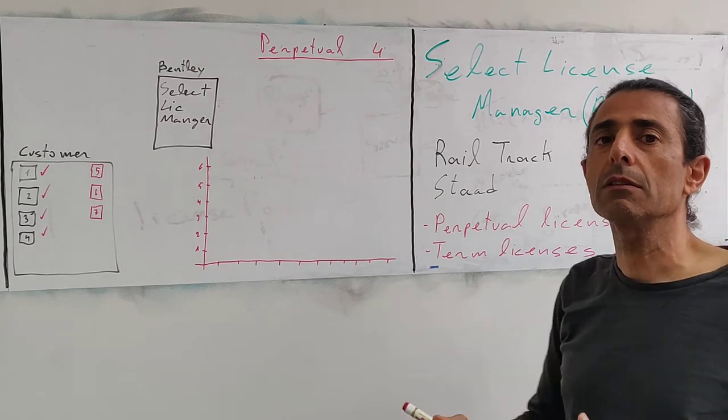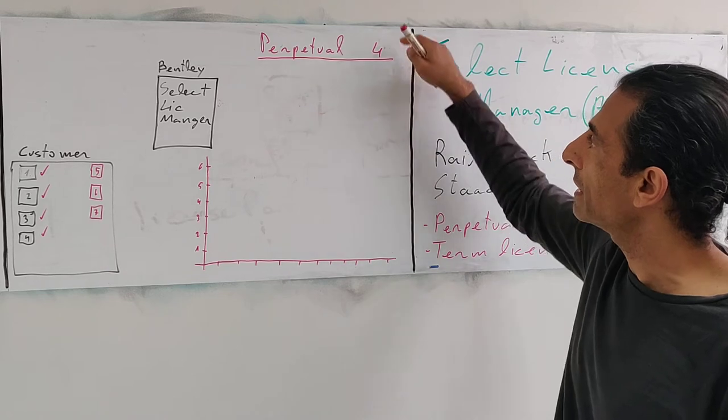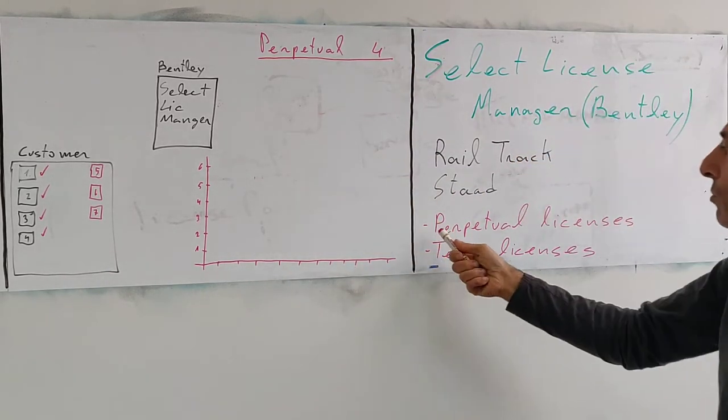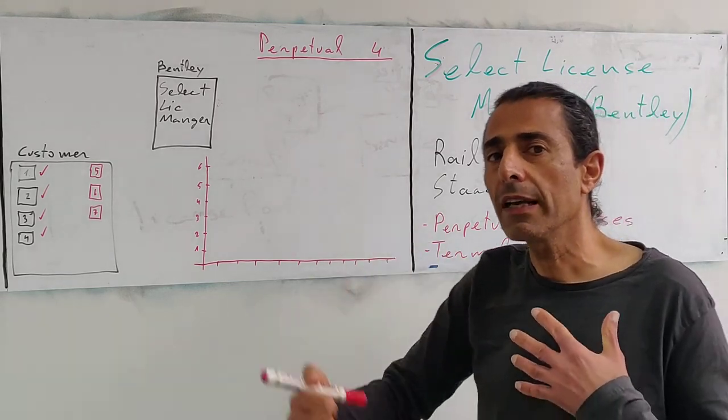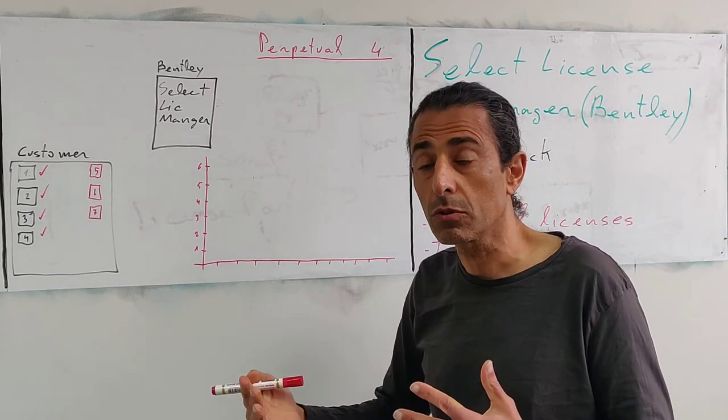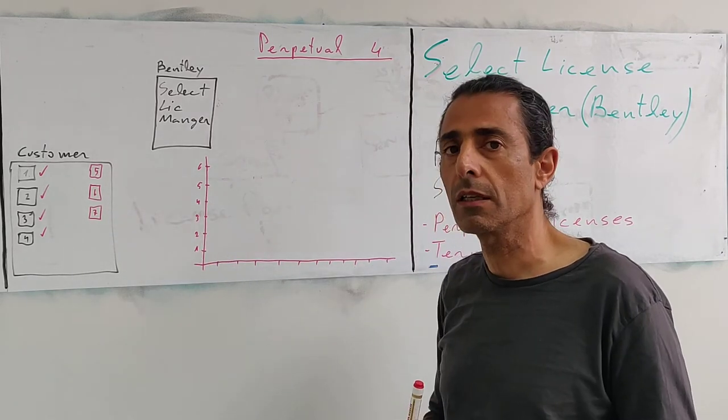So Bentley says it's not working like that. If you go over the number of perpetual licenses, you start using the term licenses. So we will fulfill any number of licenses you consume and we'll give you term licenses for the additional users.